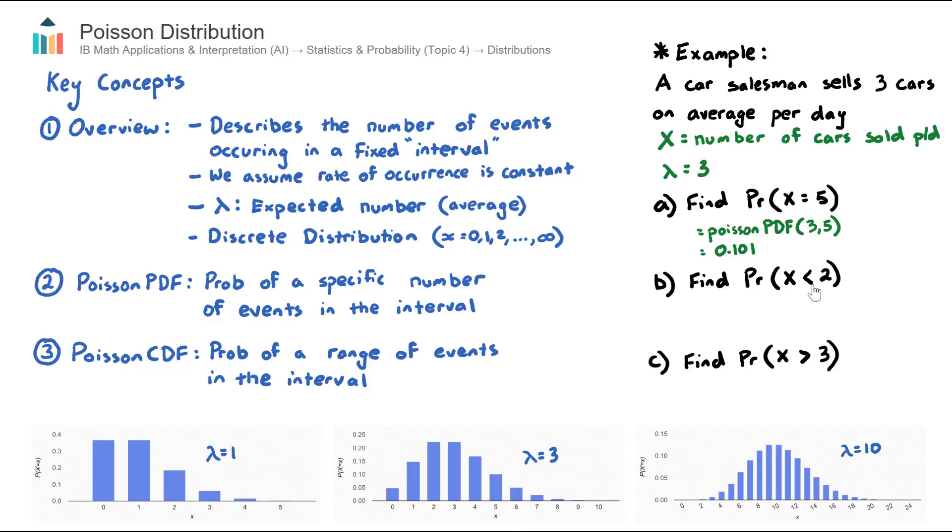Part B is the probability of this salesman selling less than two cars, so in other words, zero or one. We can look at that visually and get a good estimate. Zero and one are the heights of these two bars, and we add them together.